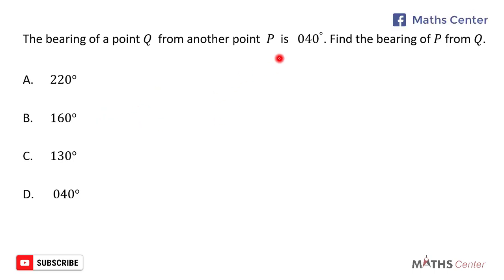Let's illustrate this on a diagram. So let's assume that we have point P here and we have point K here. The question has given us the bearing of K from P which will be shown by the vector P as 40 degrees.